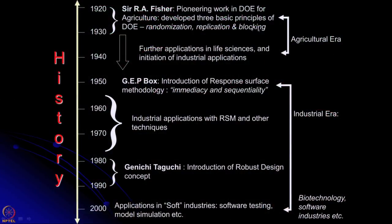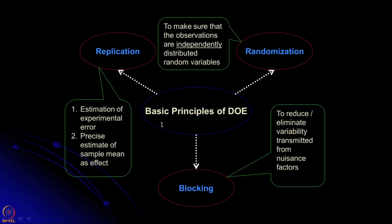Now, what are the three basic principles? Please remember that throughout this area the basic principles have not changed — they have remained the same as laid down by Sir R.A. Fisher: randomization, replication, and blocking. The idea behind randomization is that what you conduct in a laboratory or on a small scale in an industry, you would like to apply the results in a real-life situation, where there are many uncontrollable and random factors.